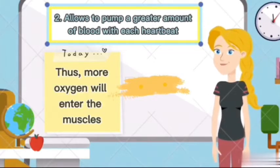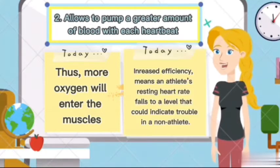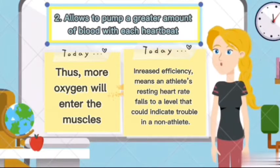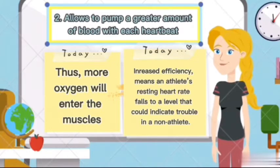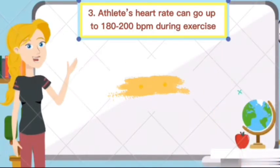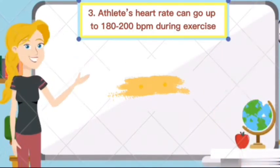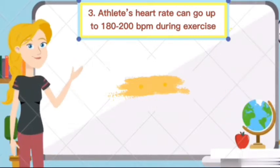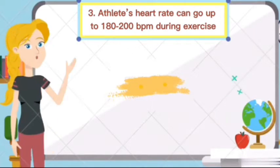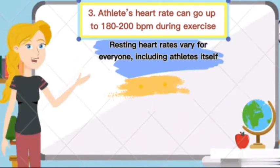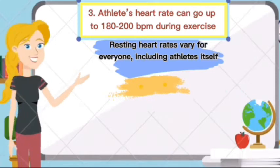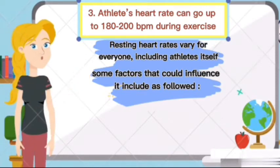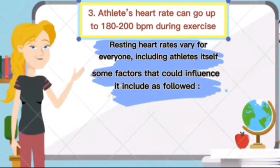Thus, more oxygen will enter the muscles. This increased efficiency means an athlete's resting heart rate drops to a level that could indicate trouble in a non-athlete. Thirdly, an athlete's heart rate may go up to 180 to 200 beats per minute during exercise. In addition, resting heart rates vary for everyone, including athletes themselves, and there are several factors that could influence it.